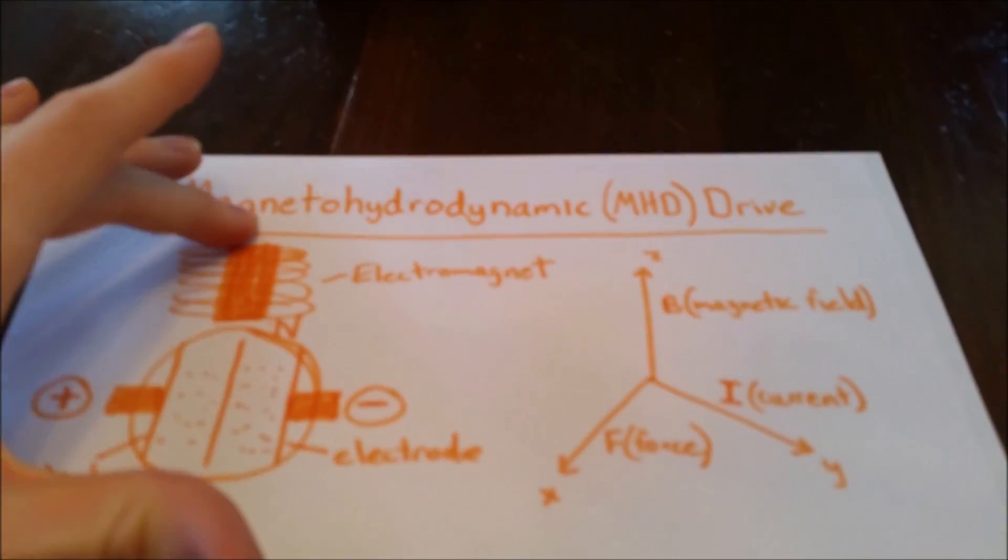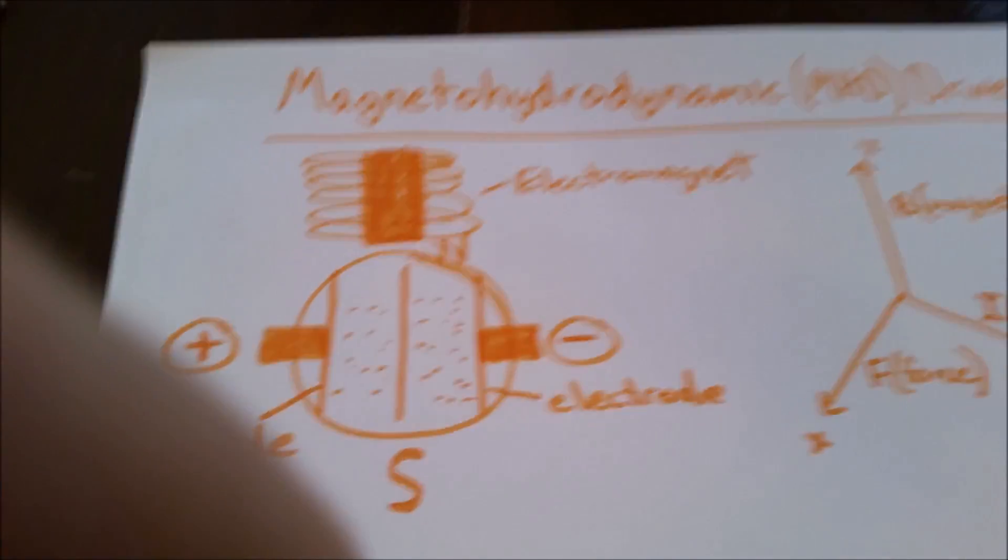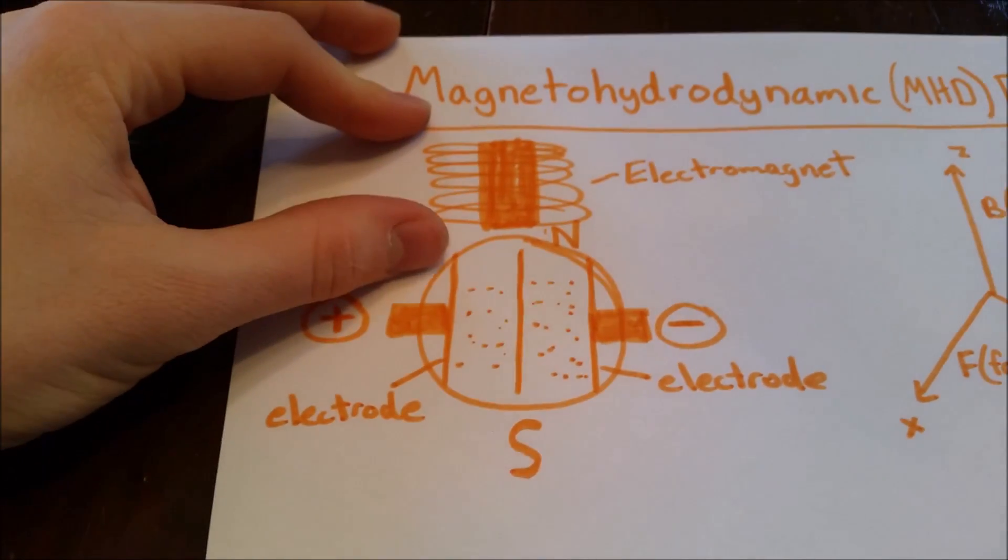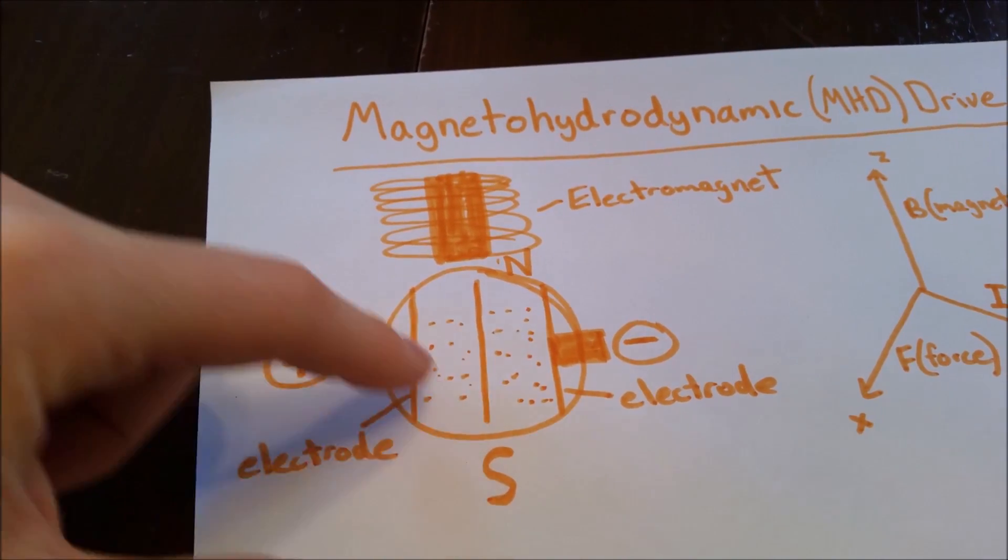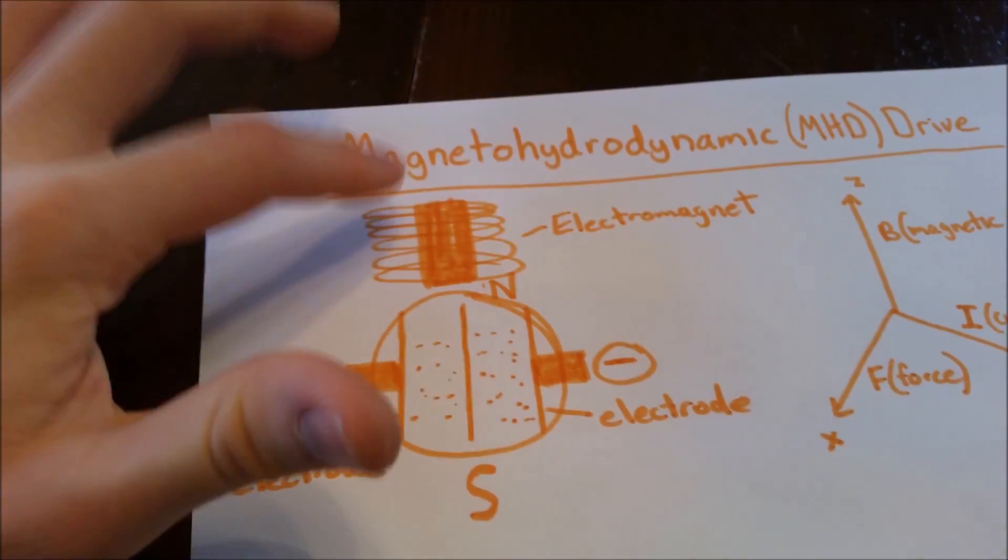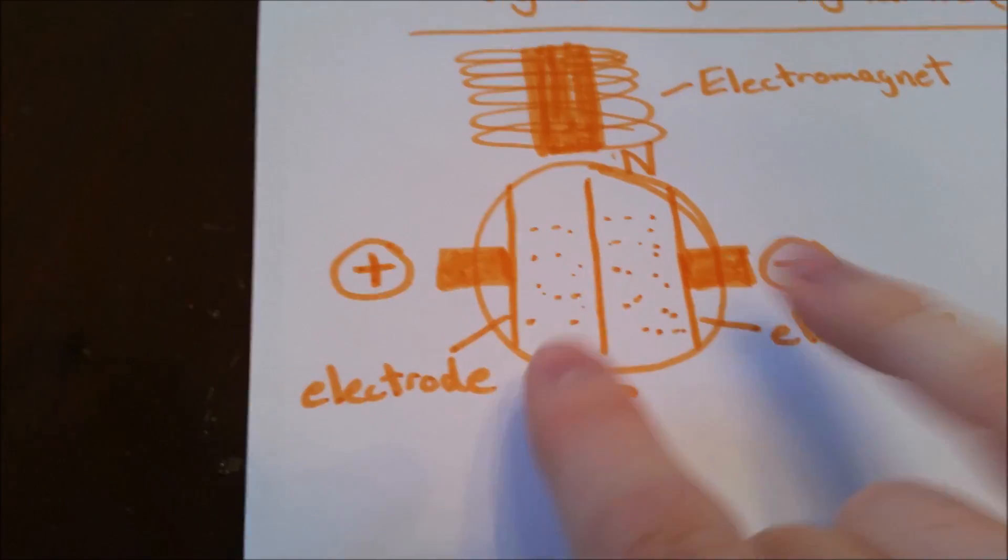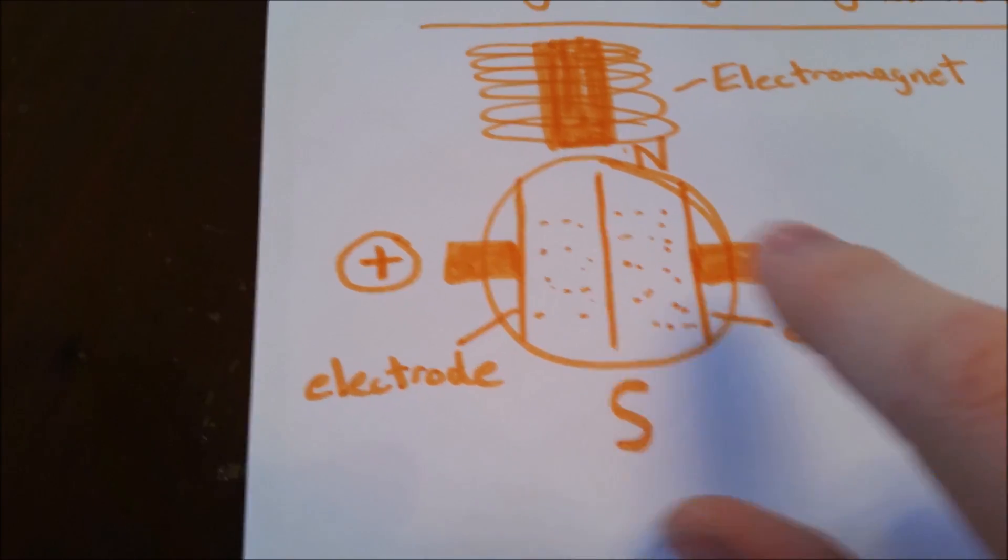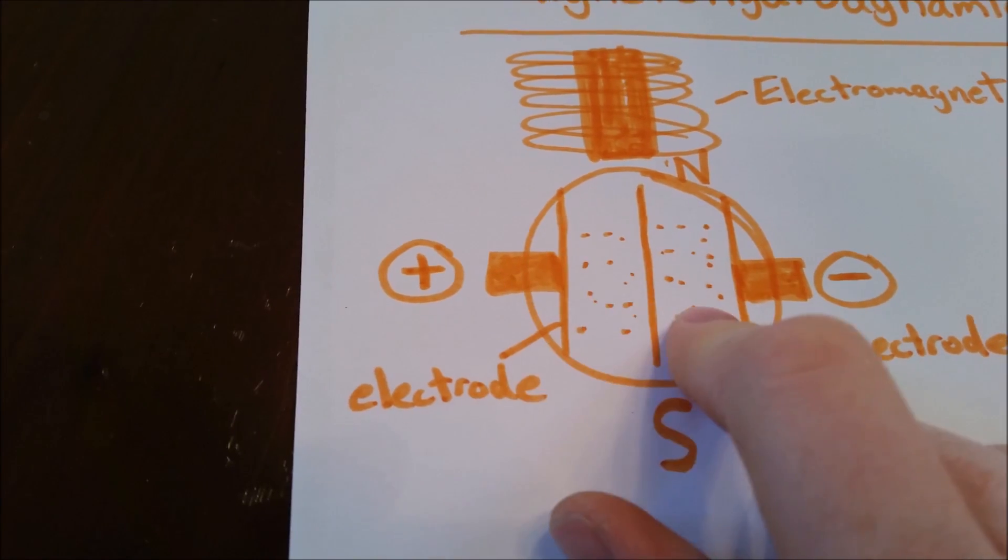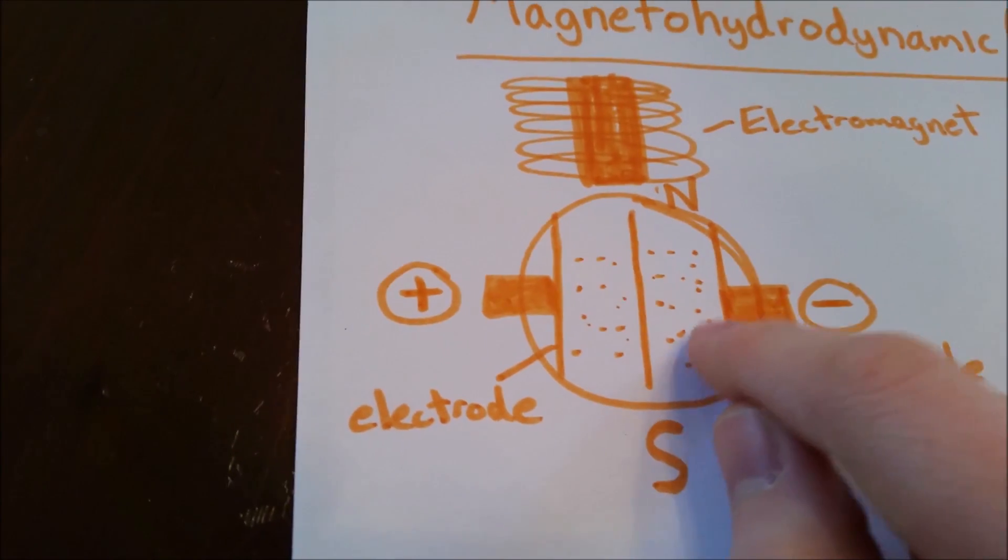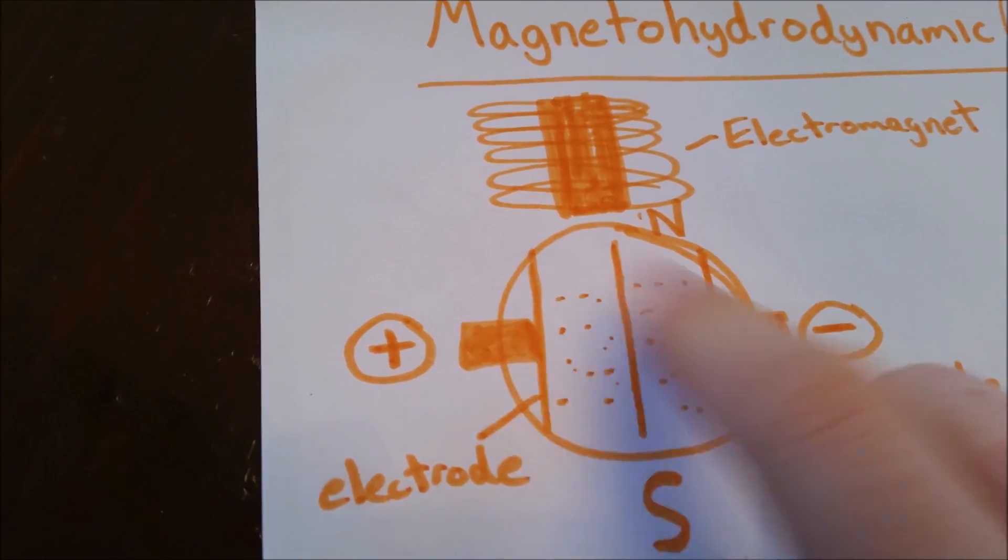The system uses no moving parts to move water because it uses electricity and magnets. In our setup, we used a PVC pipe, paint sticks covered in aluminum foil as our electrodes, and we made our own electromagnet. You apply a positive voltage on one end and a negative voltage on the other, creating a capacitor. Because this is submerged in salt water, which is a good conductor, the electrons actually flow from one electrode to the other. You have a current through water.